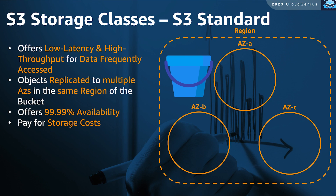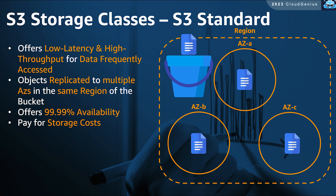The first storage class is S3 Standard. Compared to the rest of the other storage classes, S3 Standard would be the most expensive one. It offers low latency and high throughput for data that is considered to be very hot — the data that is expected to be frequently accessed. When you upload an object to the Standard storage class, that object will be replicated at least three times to three different AZs in the region where the bucket is created, offering 99.99% data availability. The cost structure for S3 Standard is mainly the storage costs of your objects.